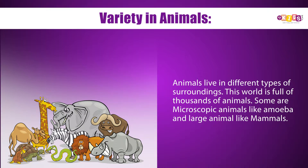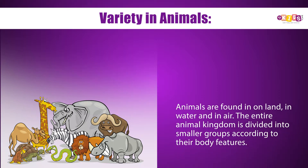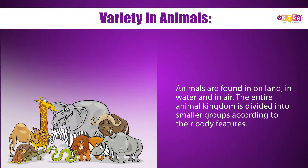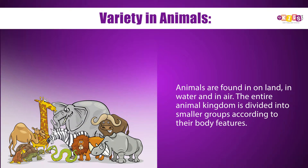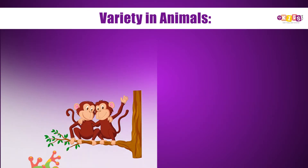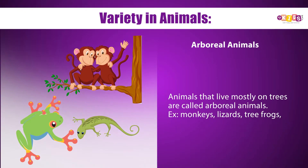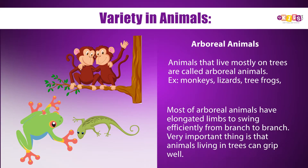Animals live in different types of surroundings. This world is full of thousands of animals — some are microscopic like amoeba, and large animals like mammals. Animals are found on land, in water, and in air. The entire animal kingdom is divided into smaller groups according to their body features.